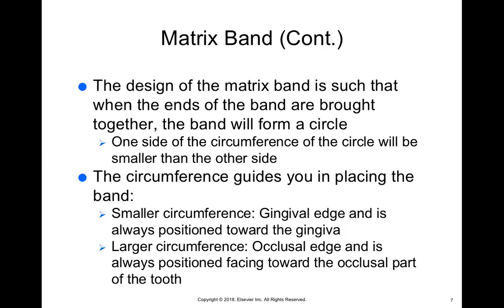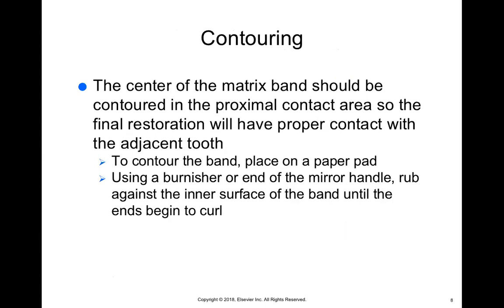The center of the matrix band should be contoured in the proximal contact area so the final restoration will have proper contact. To do this, we take our football burnisher, put the matrix band down on a piece of paper, and rub the burnisher along the middle of the band to contour it. This gives the band more shape so it won't be like a box — because our teeth have curves and contours. If you don't have a burnisher, you can use the back end of a mouth mirror.